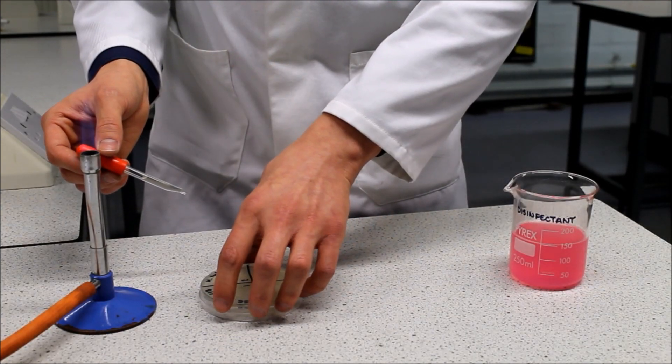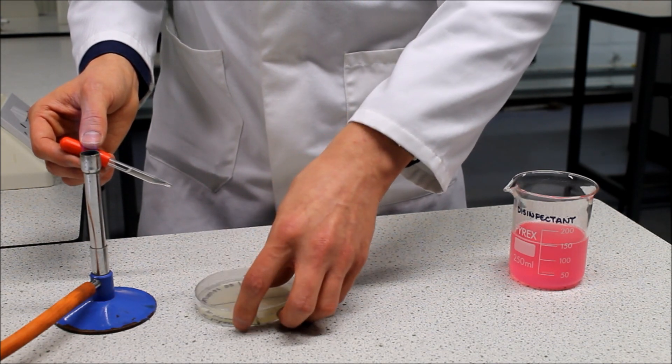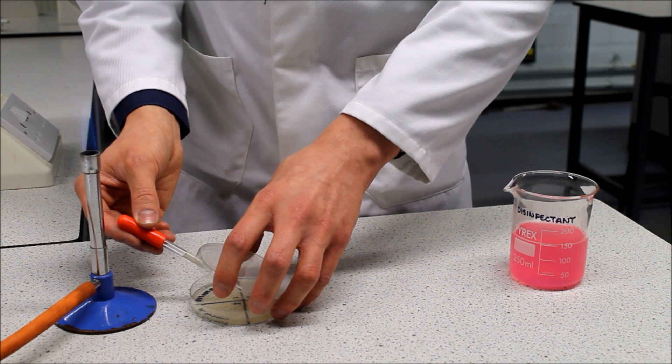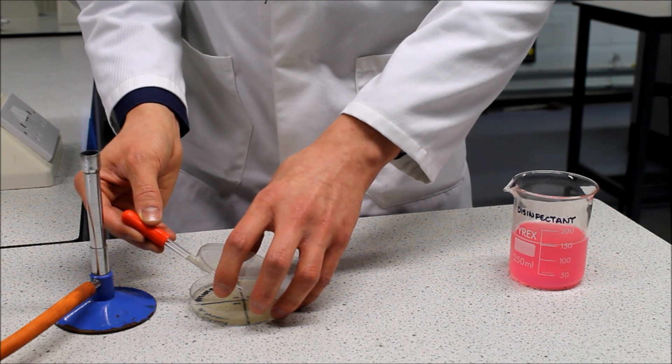Slightly lift the lid of the agar plate at the side nearest the Bunsen burner. Use the pipette to put two to five drops of culture, roughly the size of a five pence piece, onto the surface of the agar and replace the lid.